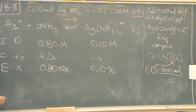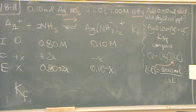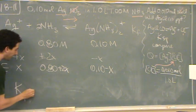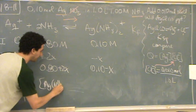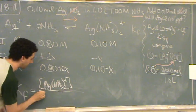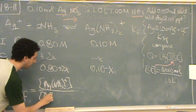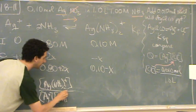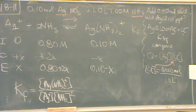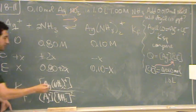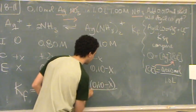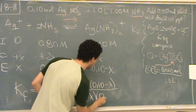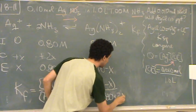Now I'm going to write my K. What K is it? K_f, because this is a formation reaction — a K_f reaction. And everything's included; they're all aqueous. This is the concentration of Ag(NH₃)₂⁺, all over Ag⁺ times ammonia squared. I've got to square the ammonia because there's two of them. And then you just plug in from the E-line everything: (0.10 − x) / (x · (0.8 + 2x)²).